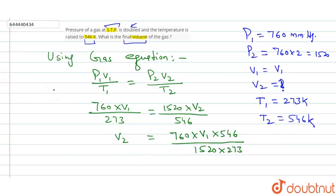So we start solving it. If you see here, 273 and 546 will be cut off by 2. Okay, 760 and 1520 will be cut off by 2, and 2 will also be cut off. So what will we have here? We will have here V2 is equal to V1, which means that volume of the gas remains same. Okay, so this will be the answer. The volume of the gas...